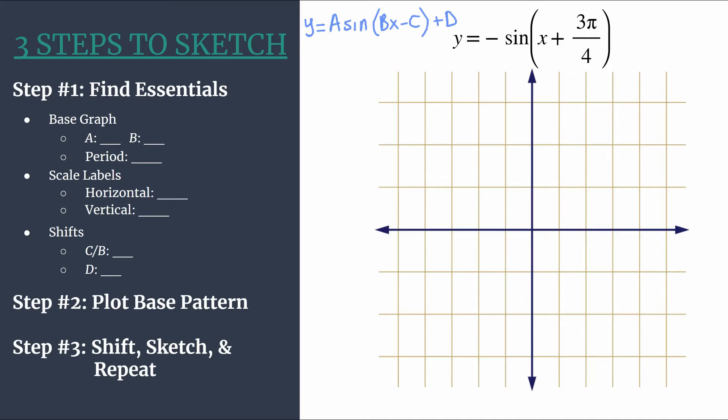We'll start with finding the information about the base graph. We need to identify a, and we see there's an understood 1 in front of sine, negative 1 specifically. So a is negative 1. Take the absolute value of that - the amplitude of this graph is the same as the parent graph y equals sin x, it's just 1. It also tells us we have a reflected base pattern. So I like to put a star next to step 2 as a reminder: I need to do the reflected base pattern.